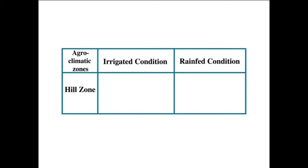Variety selection plays a big role in achieving a bumper harvest. Locally adapted, high-yielding, and disease-resistant varieties are to be chosen for successful grain production. For hill zones under irrigated conditions, the recommended varieties are UP-1109, Giri Raja, Sonalika, and HB-208. Under rain-fed conditions for hill zones, the recommended varieties are Arjun, UP-2338, PBW-154, and LOG-1.